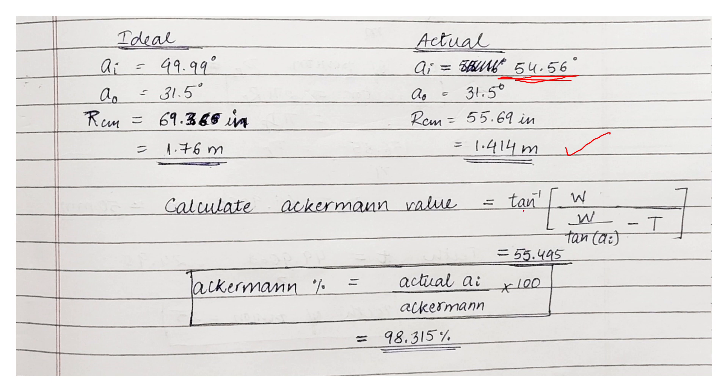We calculate the Ackermann value which is given by this formula: tan inverse wheelbase upon wheelbase upon tan of the angle of inner turning minus the track width, which comes out to be 55.495. And we calculate the Ackermann percentage as actual inner turning angle to the Ackermann, which comes out to 98.315%.